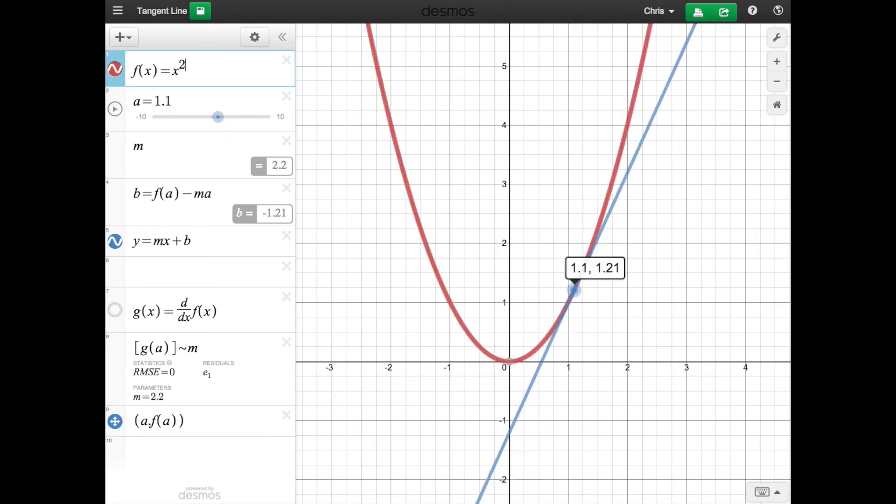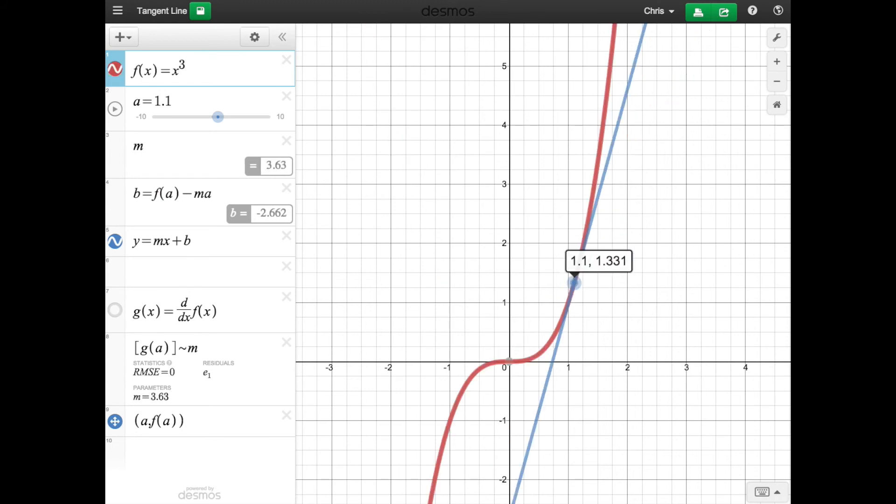You could also change the function, so say we want x to the third, and it still works. So you can move this, and it would show you the slope of the tangent line, the equation of the tangent line at each point, and then it shows you what the tangent line looks like.